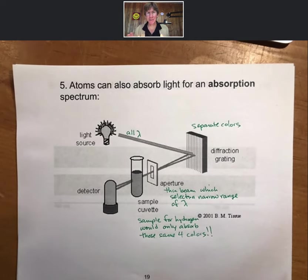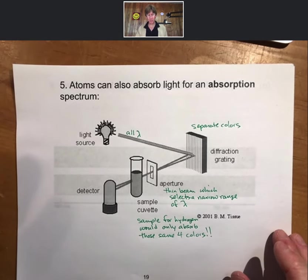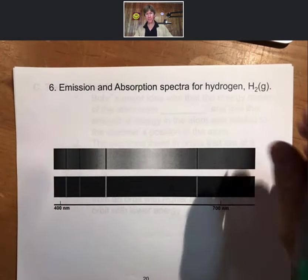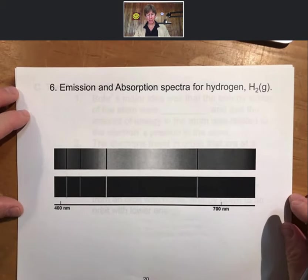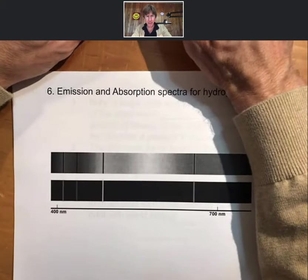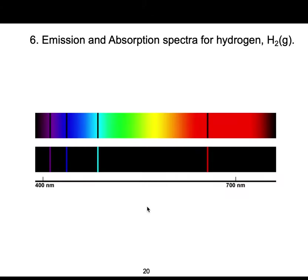Still amazed by that fact after 20 years — it's a simple experiment and still so cool. These are the absorption and emission spectra for hydrogen. You can clearly see four colors: the top one is the absorption spectrum — those are the only colors missing — and the bottom is the emission spectrum — those are the only four colors present.